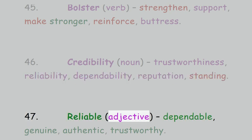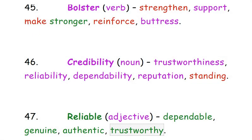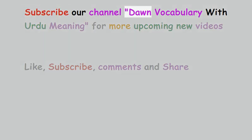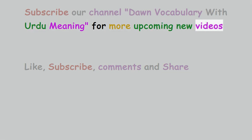47. Reliable, adjective: dependable, genuine, authentic, trustworthy. Subscribe our channel Dawn Vocabulary with Urdu meaning for more upcoming new videos. Like, subscribe, comment and share.